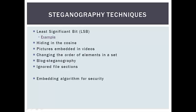One technique is using the least significant bit. This method conceals messages within the lowest bits of a noisy image. The last bit of a pixel is the number that will be part of the message. This causes the smallest change in the pixel and makes it the least noticeable. This can also be done in the white noise of MP3s. Depending on the size of the image, this method may be noticeable.